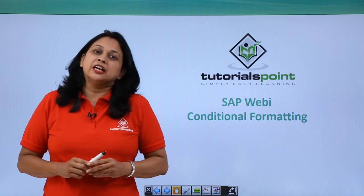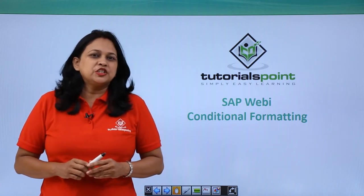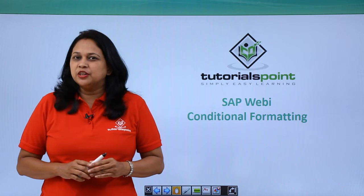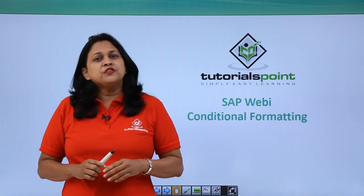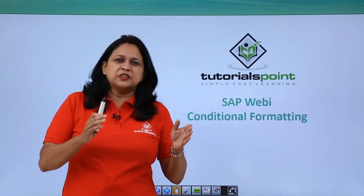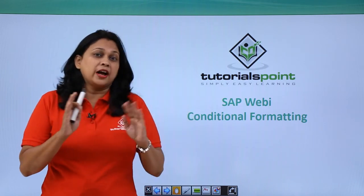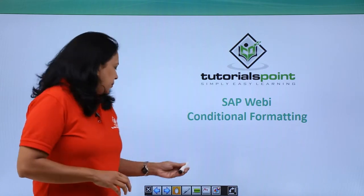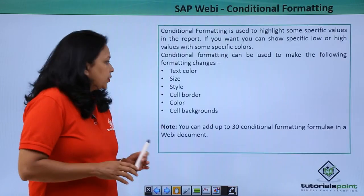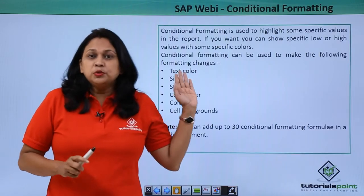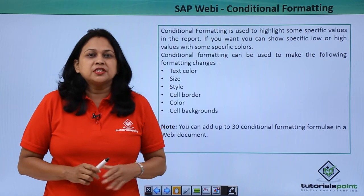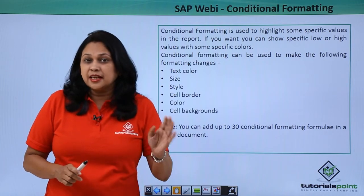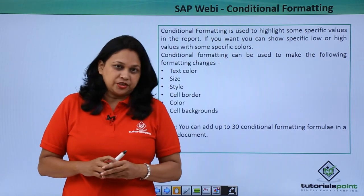In a WebEye document, conditional formatting is used to highlight specific values in a report. It shows specific low or high values using colors. You can use conditional formatting to make changes in text color, size and style, cell border, and cell backgrounds.